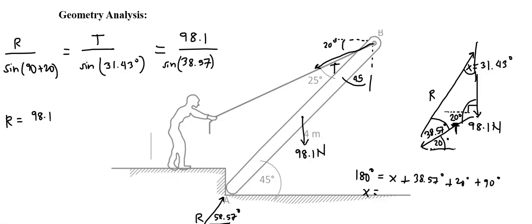Now we can solve for R. R here is equal to 98.1 sine of 110 degrees over sine of 38.57 degrees. To solve for T, you can cross-multiply sine of 31.43 with 98.1 over sine of 38.57.